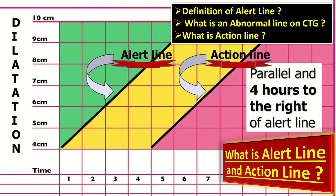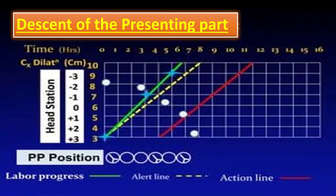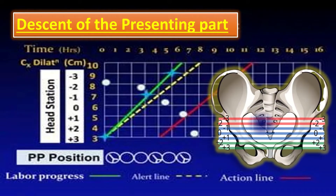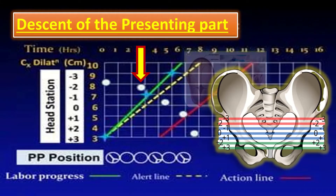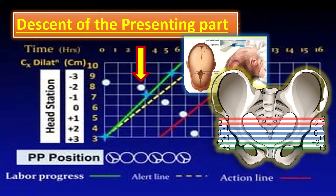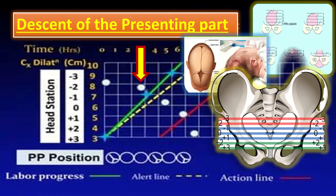The descent of the presenting part: the level of the head in the maternal pelvis can be assessed by two methods. When assessed by vaginal examination, the level is plotted on the graph as cm above and below the ischial spine and is represented by a dot. The presence of caput and moulding interfere with the accuracy of such assessment. At abdominal examination, the level of the head is assessed as fifths palpable, and the sagittal suture positions are represented accordingly on the partogram.